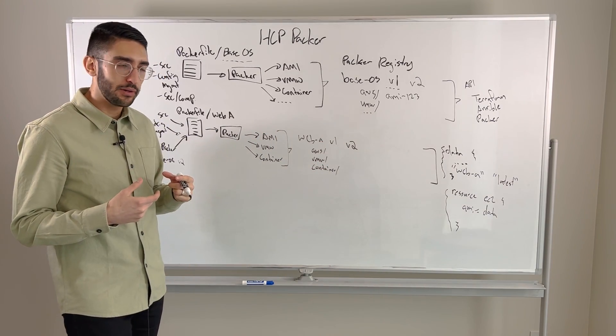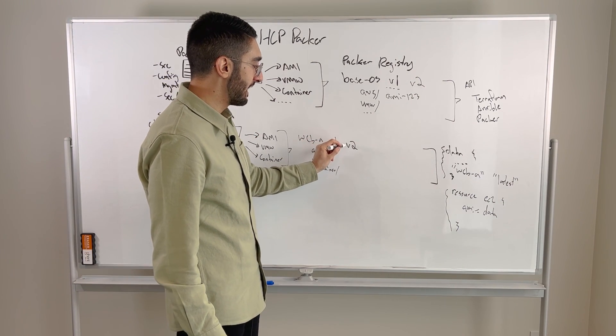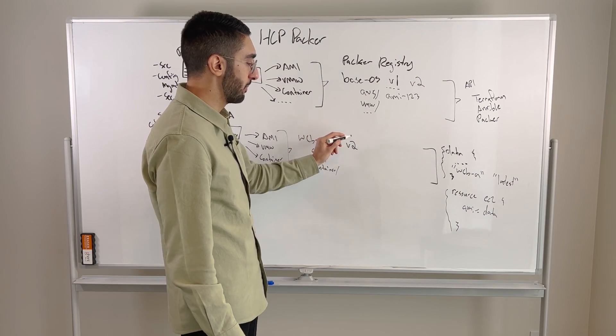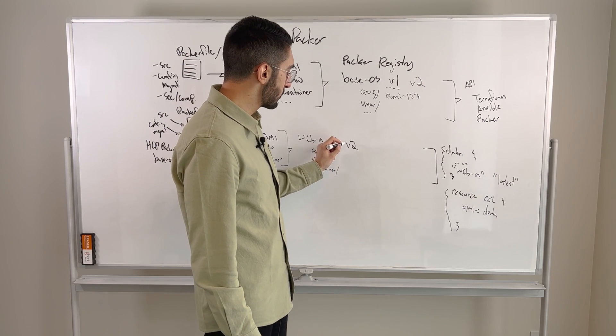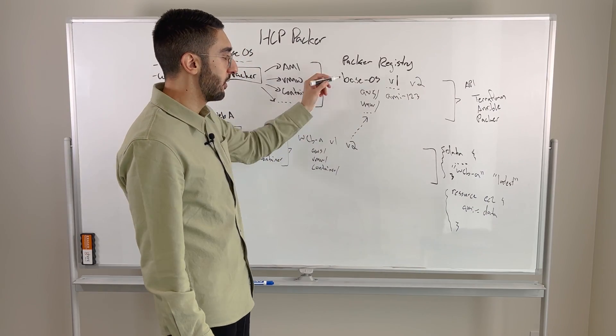Now a key property of this is that as part of the Packer registry, we'll maintain the metadata of what parent builds these were baked on. So we know the version 2 of this depended on and built on top of version 2 of the base OS image.